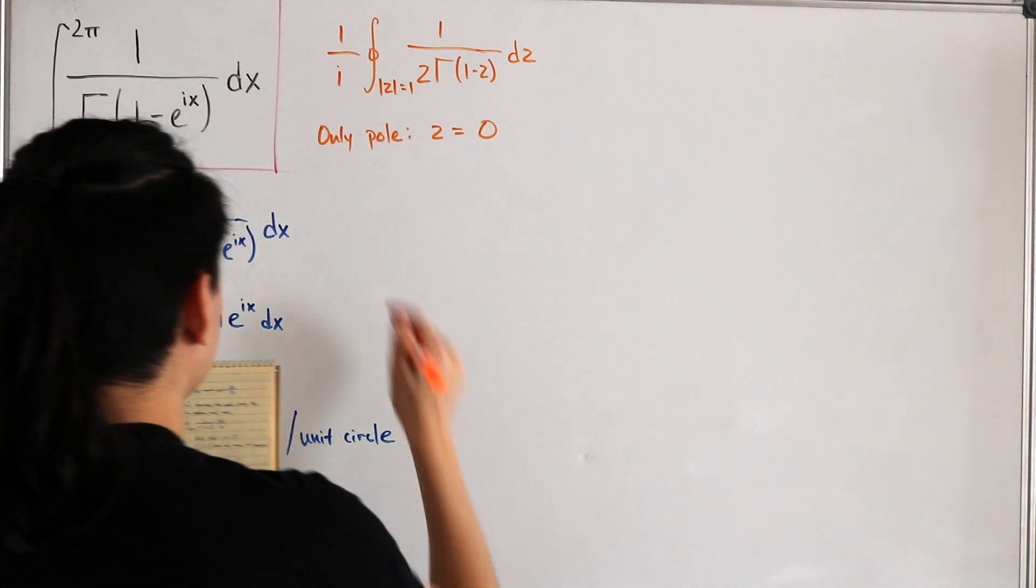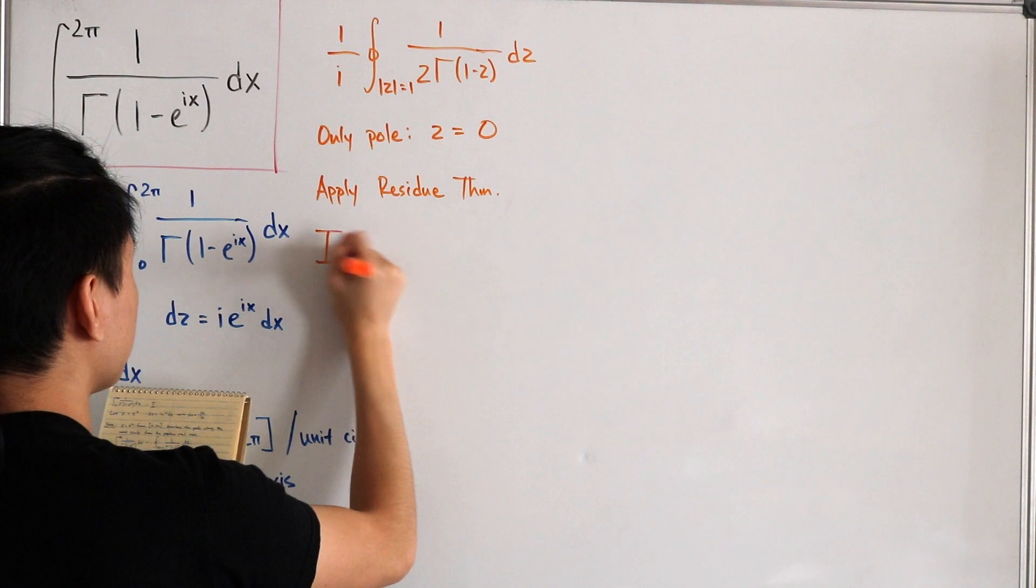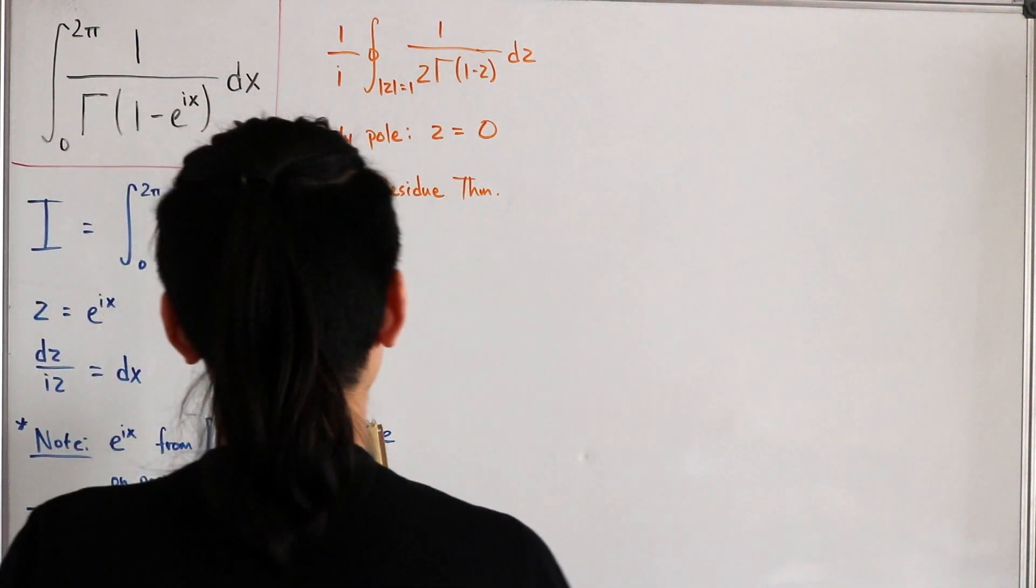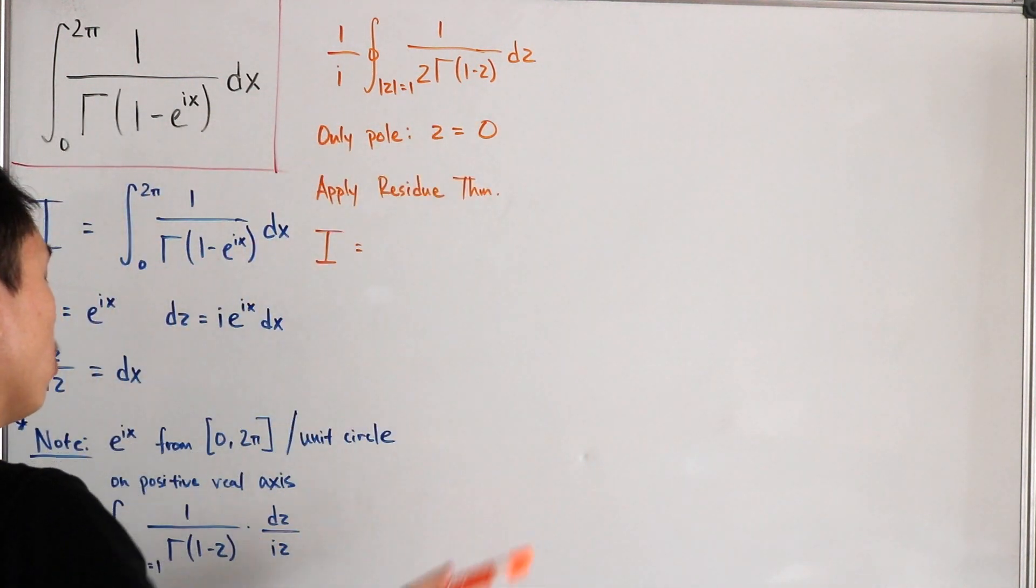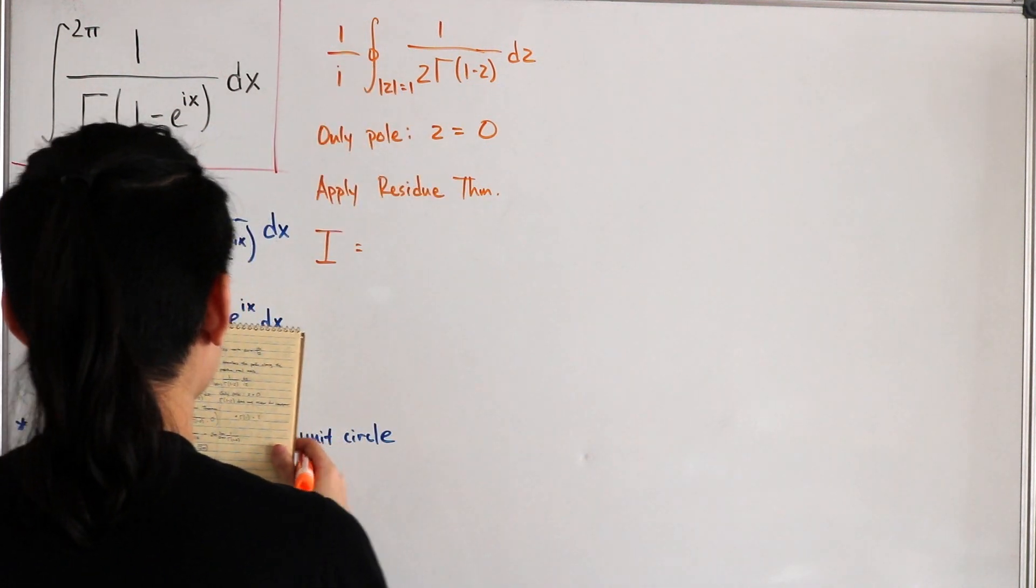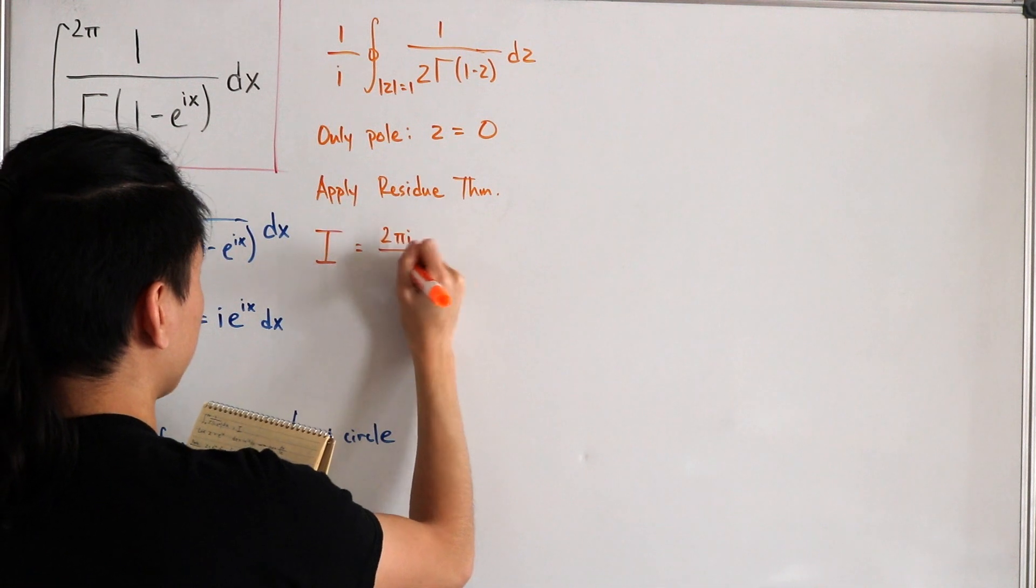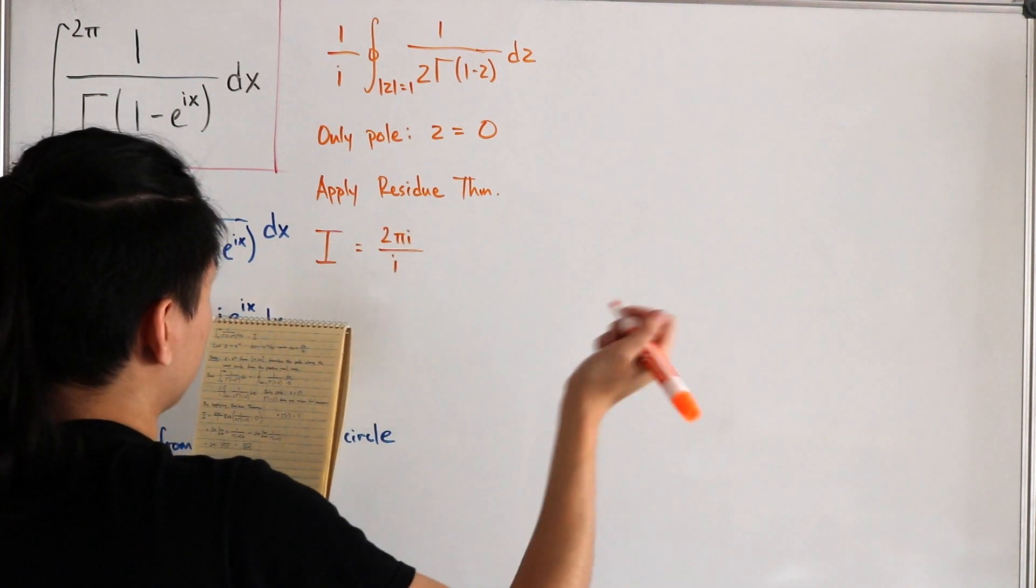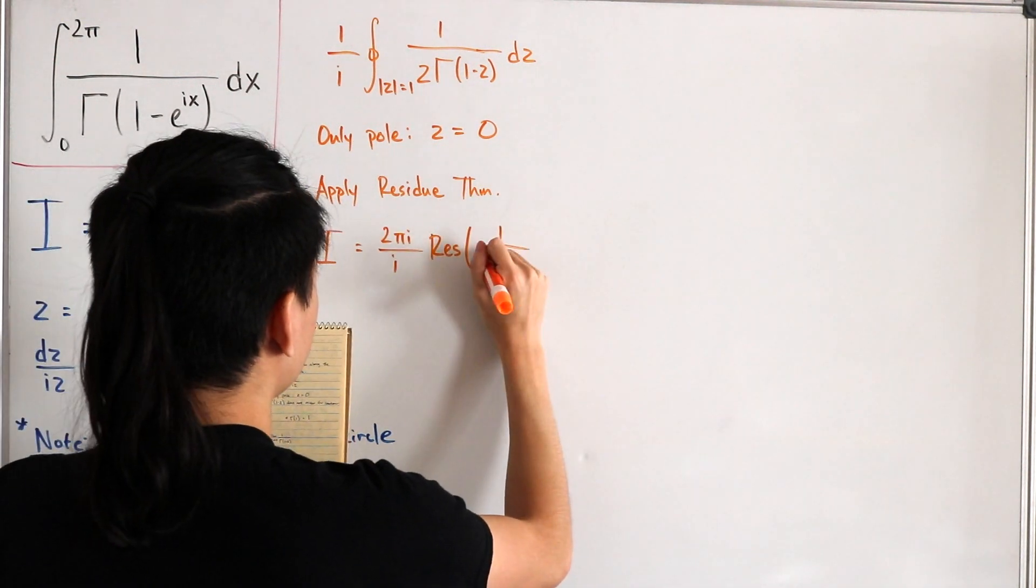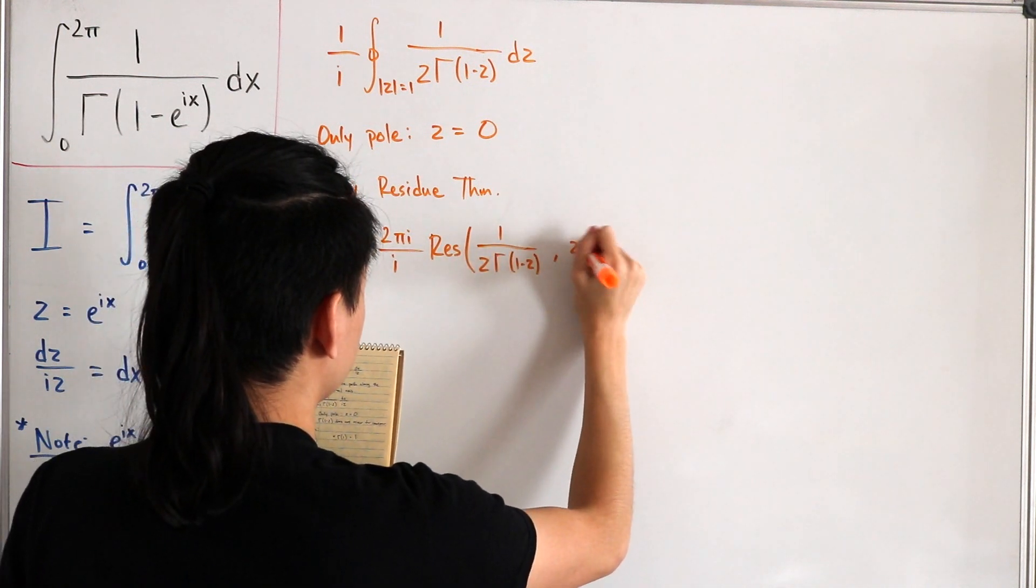And so what that means is that if we apply the residue theorem, we know that I is just equal to, so residue theorem means you're calculating the sum of all the poles that are inside our unit circle. But since only z equals zero is only involved in this situation, that's the only thing we need to calculate. There's only one pole that we need to evaluate. And z equals zero. So that means we have the following form: two πi, then just divide it by i, then add up the sums of your residues, which is only just one. So it's just multiplied with the residue evaluated at one divided by z times gamma one minus z, and then at z equals zero.